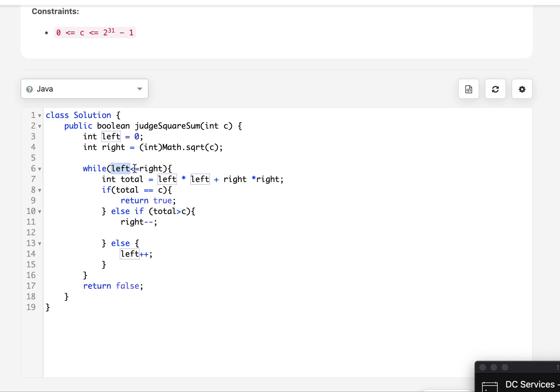Till the time my left is less than or equal to right, that means there is a possibility to find a solution. I find out the total. If my total happens to be equal to c, I abort the process and return true. If my total is greater than c, I reduce the value of right. Otherwise I increment the value of left. In the end, I simply return false as my answer.